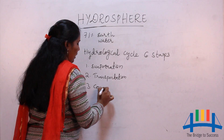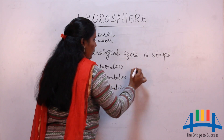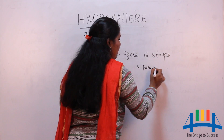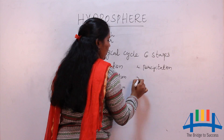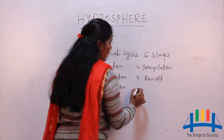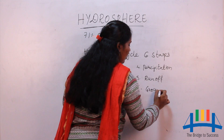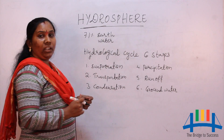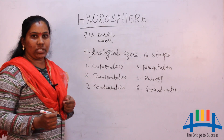The hydrological cycle has six stages. The first stage is evaporation, the second stage is transportation, the third stage is condensation, the fourth stage is precipitation, the fifth stage is runoff, and the sixth stage is groundwater. Let us see each one in detail.